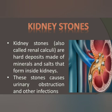Minerals and salts are basically present in the blood. But if the amount is more than normal and doesn't flush out through the urine, the excess starts to accumulate in the kidney and crystallization occurs. These stones cause urinary obstruction and other infections, so urine cannot pass out. The obstruction can cause further infections in which the kidney can fail.